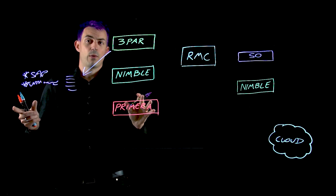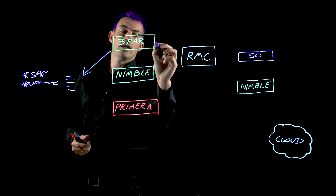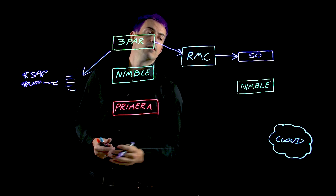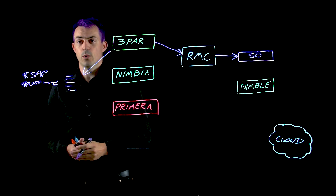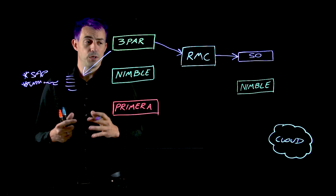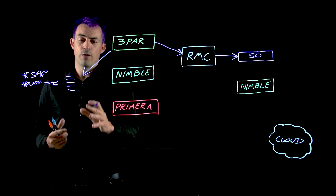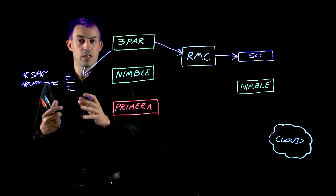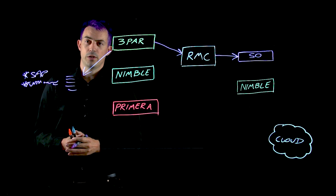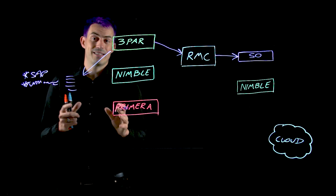That's all well and good, but you need it to move forward. So what we added was an ability to field these snapshots to a StoreOnce, through a product called Express Protect, which is now part of RMC. That gave you an ability to archive off older snapshots at an application-consistent level over to more value-based storage.